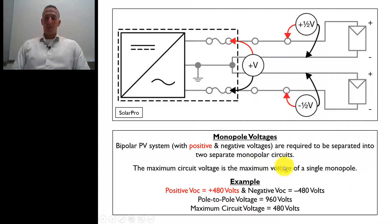The maximum circuit voltage is going to be the maximum voltage of a single monopole. So even though we would have a much higher voltage right here, because these are center tapped and tied to the earth, they're grounded, we're only measuring the voltage of either this or this, and they should be the same as long as these string lengths are the same.